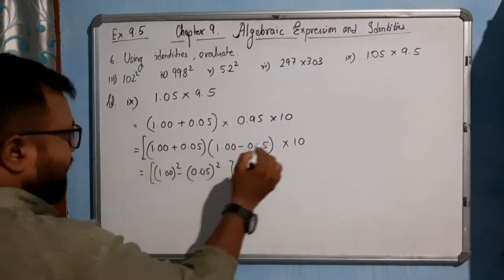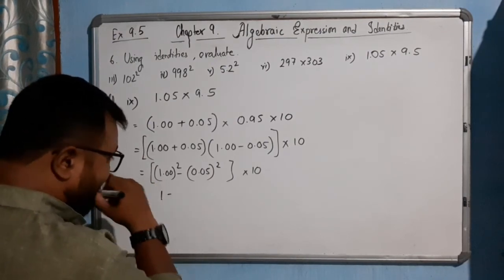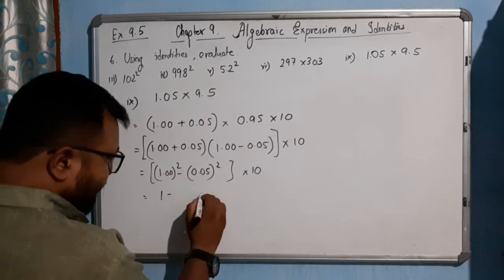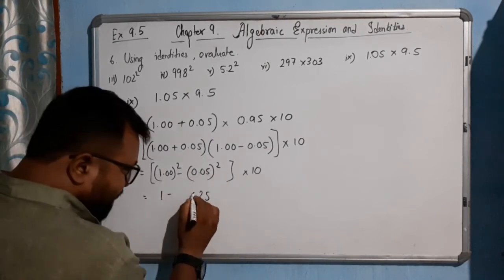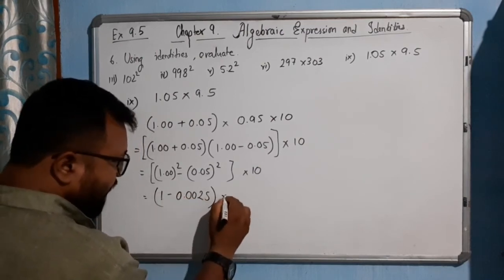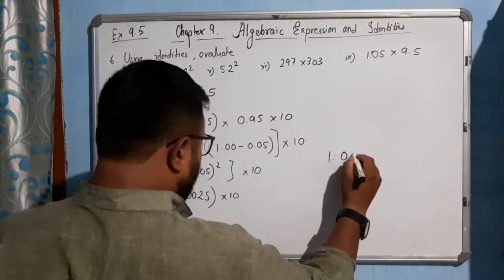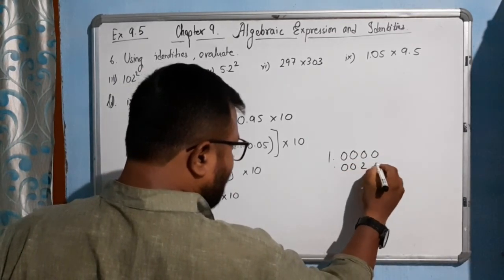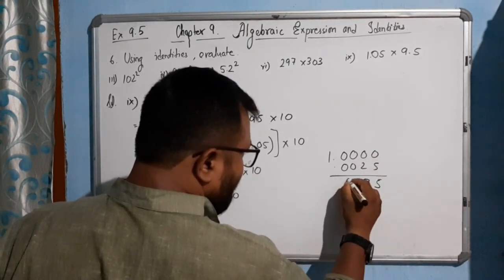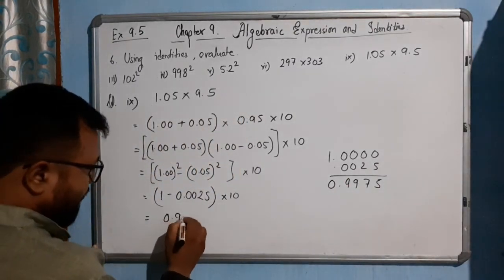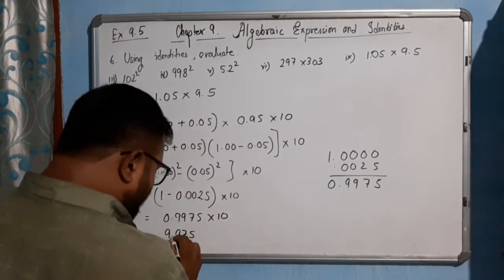So let me cover this inside the bracket. If we square, ultimately it will be 1 minus 0.0025. So 1.0000 minus 0.0025 into 10. After subtracting, it will be 0.9975 into 10, which ultimately gives 9.975. This is our answer.